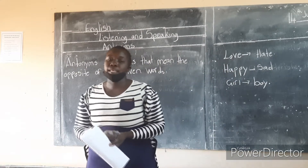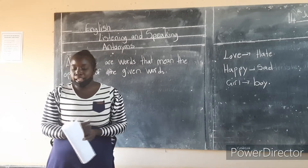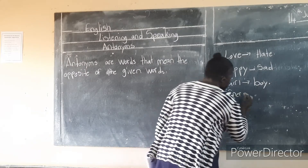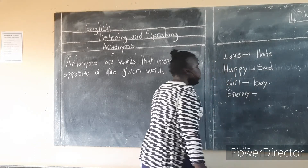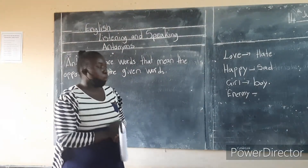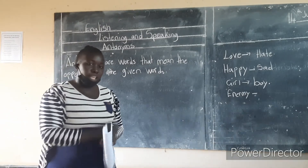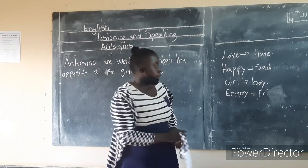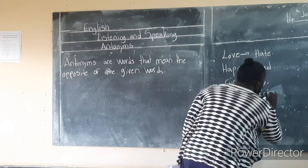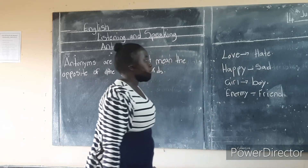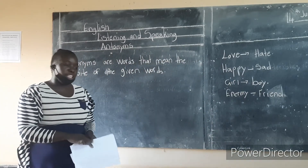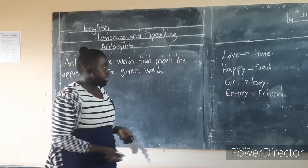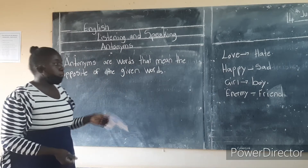Last one: someone please tell me the antonym of enemy. What is the antonym of an enemy? Very good — the antonym of enemy is friend. So to recap: the antonym of love is hate, the antonym of happy is sad, the antonym of girl is boy, and the antonym of enemy is friend.